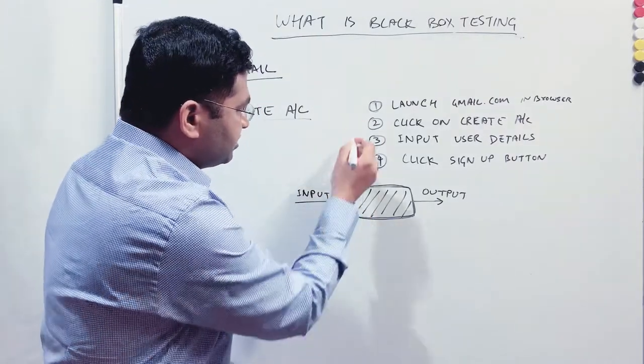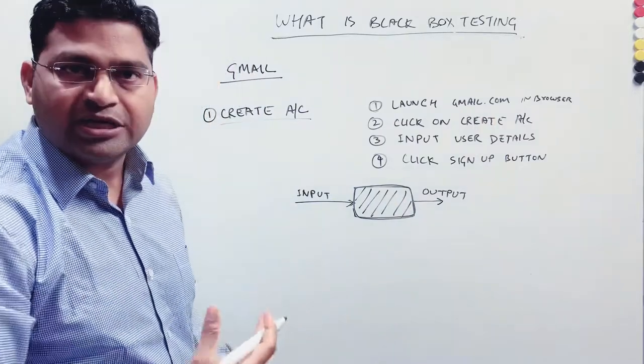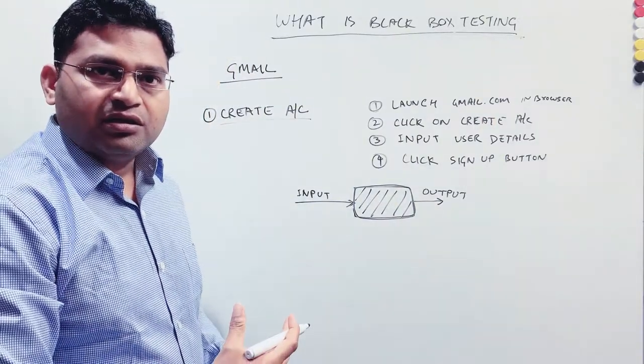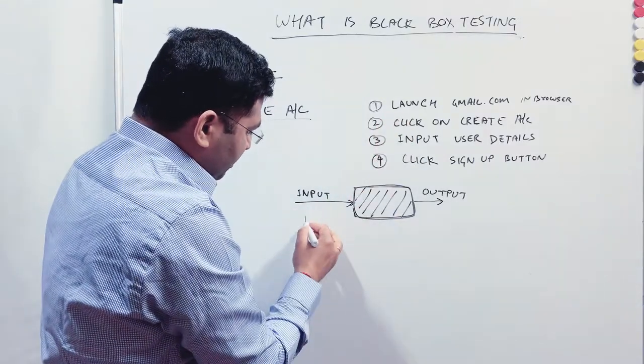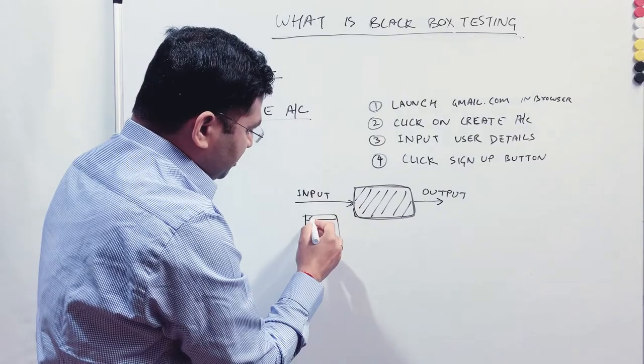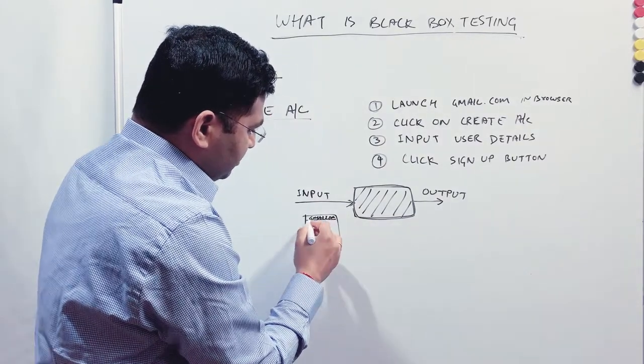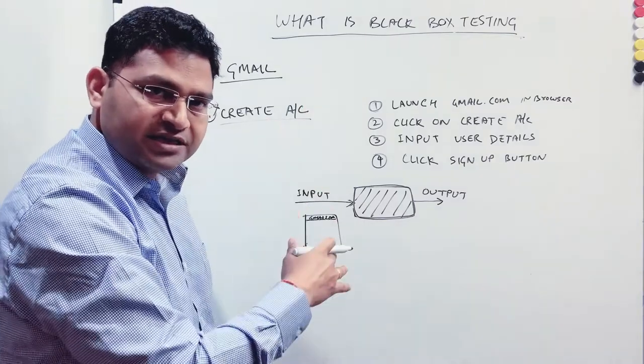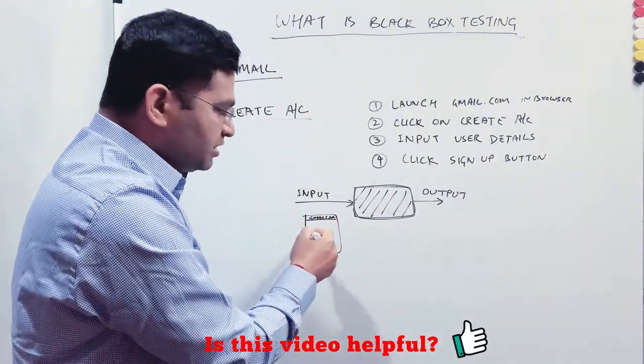So in here input, the step one input is basically launching Gmail in the browser. This is my input. These are the actions that I will do. Now, when I open the browser and I type in gmail.com, and after typing in gmail.com, I hit enter or hit go, then it opens the gmail.com.